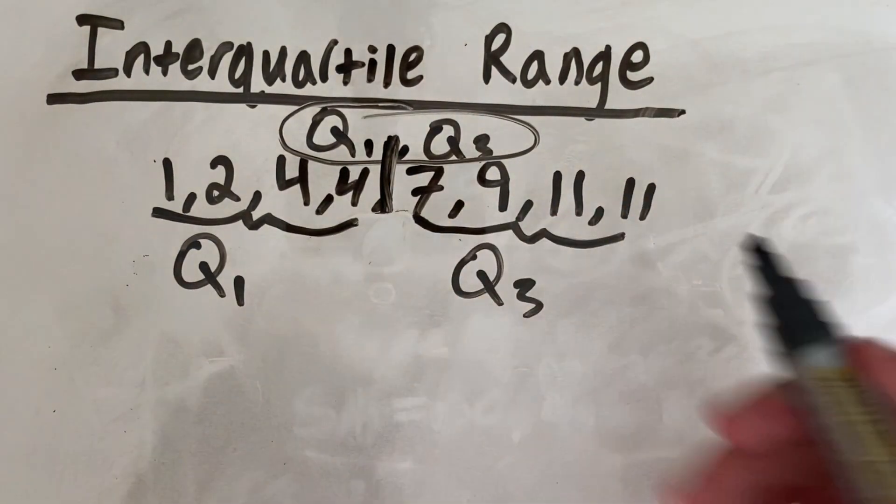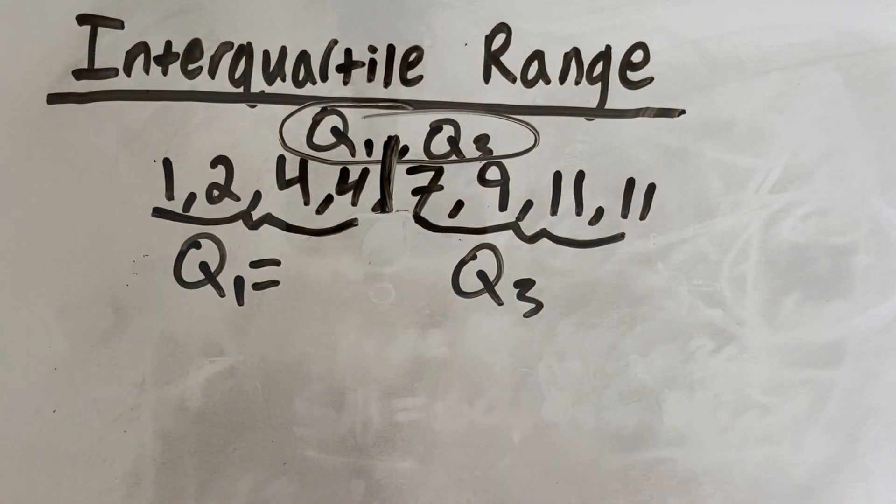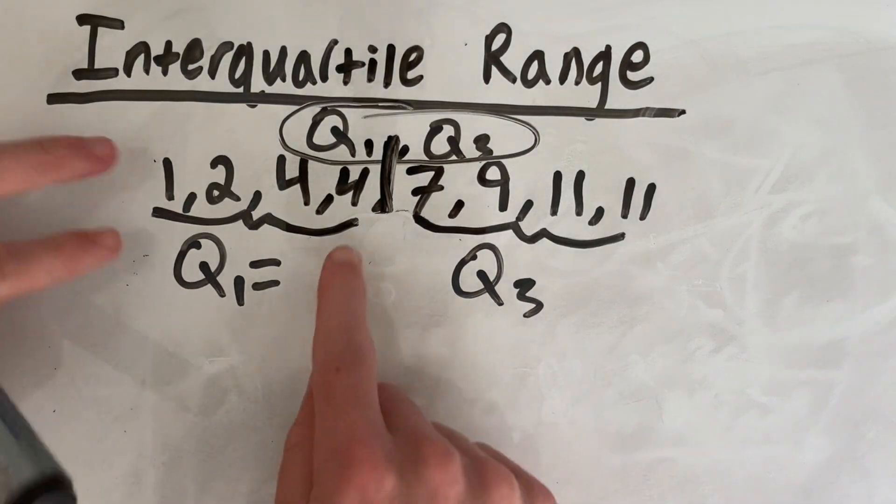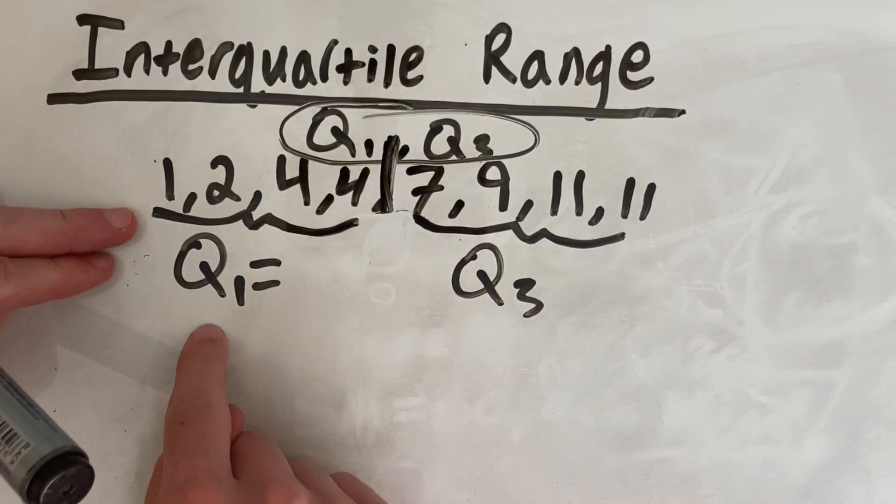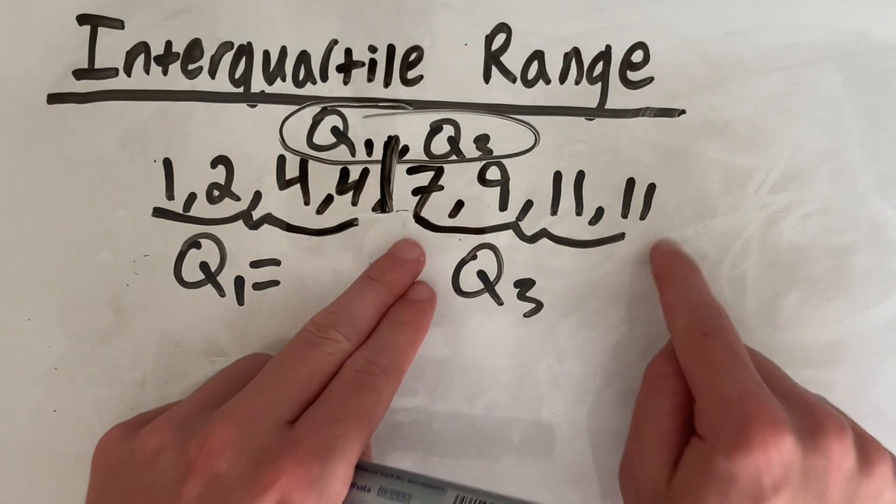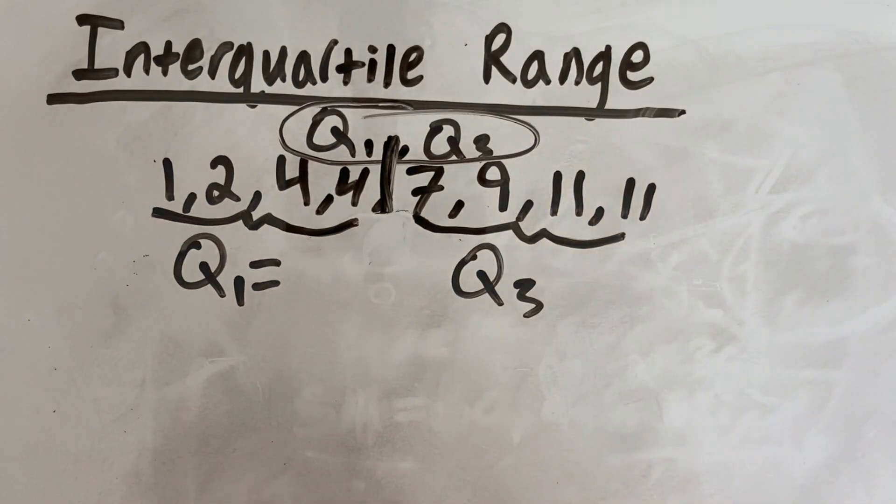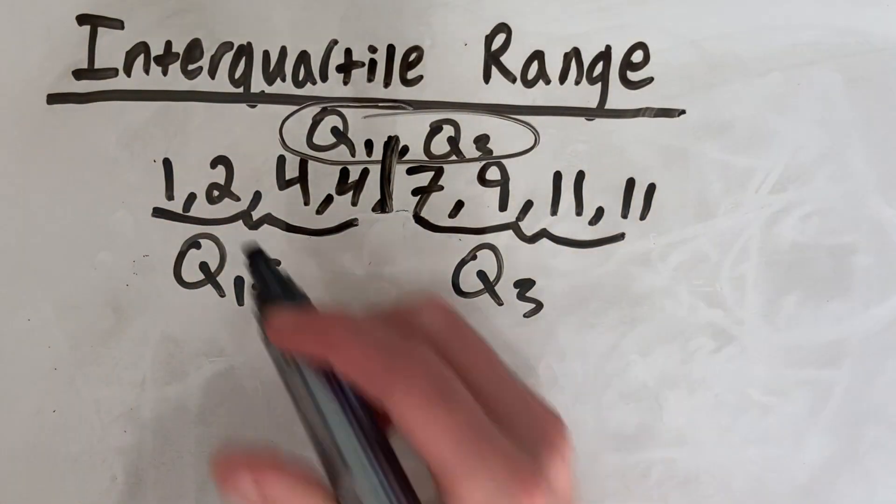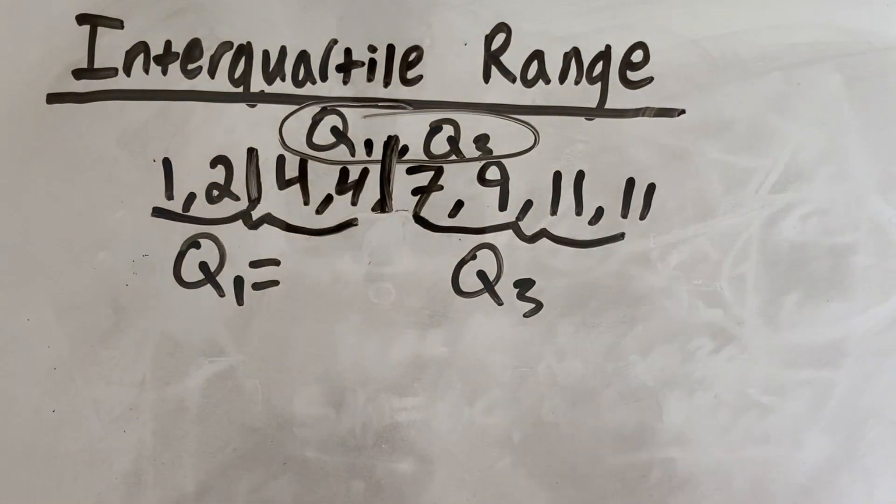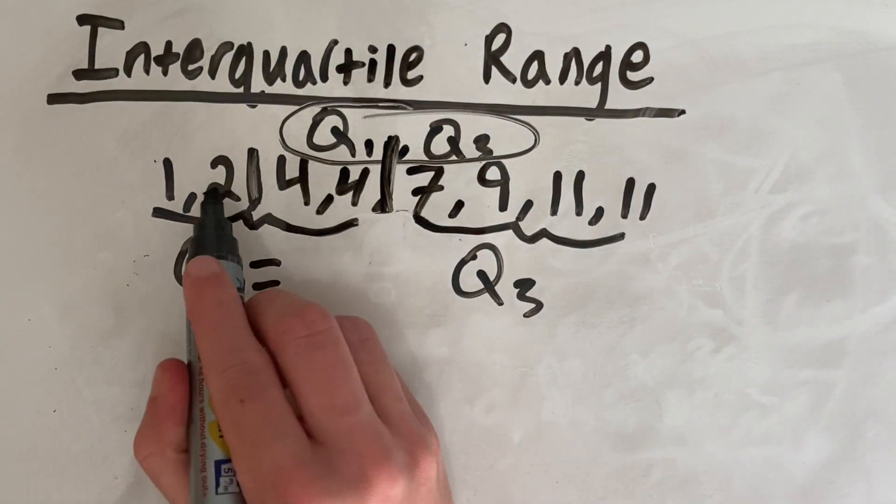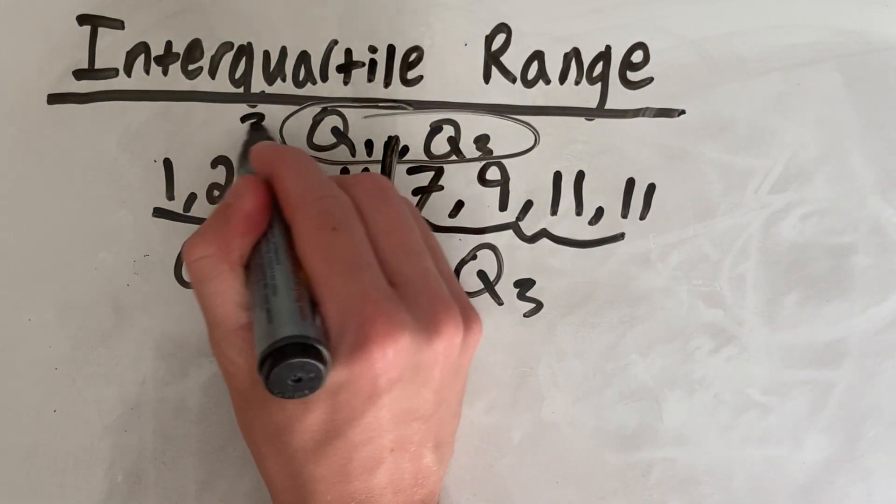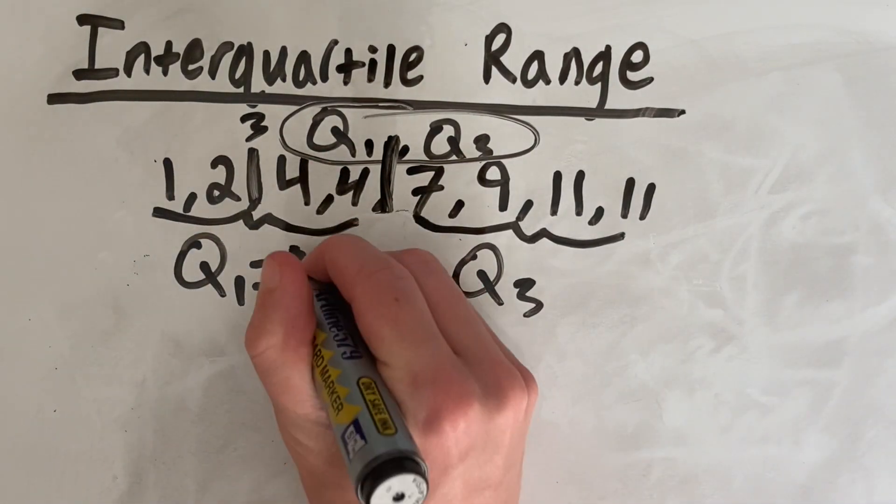Then to get your Q1 and your Q3, it's simply a matter of finding the median of your lower side, which will be your Q1, and your median of your upper side, which will be your Q3. So if we work our way in, our median, or our middle number, or our Q1 will be right in between 2 and 4, which is 3. So Q1 is equal to 3.